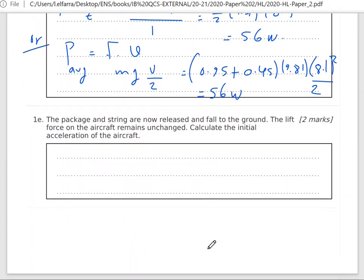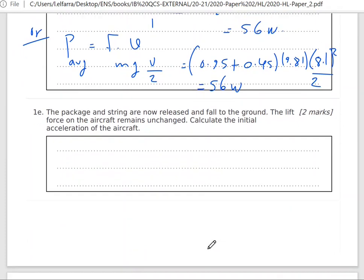Now the package and the string are released and fall to the ground. The lift force on the aircraft remains unchanged. How can we calculate that lift force, the upward force which is the force of air that pushes both the aircraft and the package?